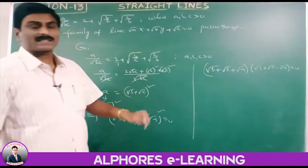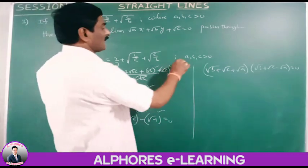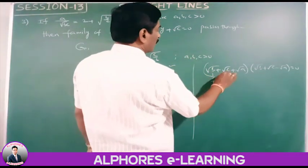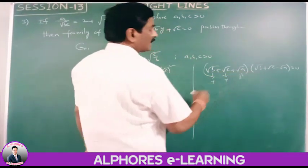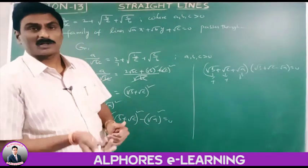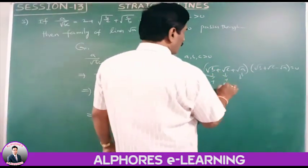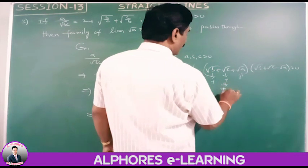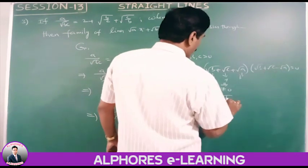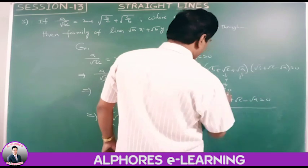Since a, b, c are all positive values, the sum (root(b) plus root(c) plus root(a)) is always positive and never equals 0. Therefore the second factor must equal zero: root(b) plus root(c) minus root(a) equals 0. This is the required condition.